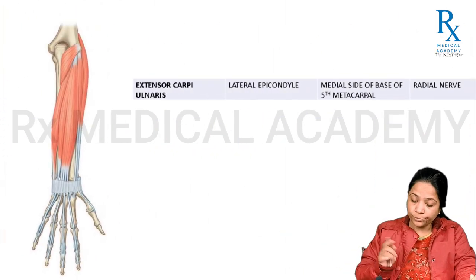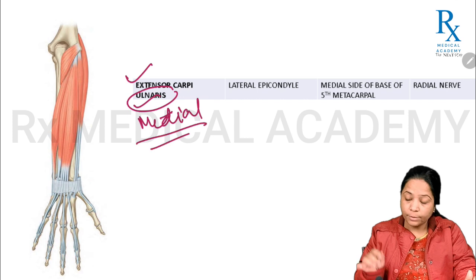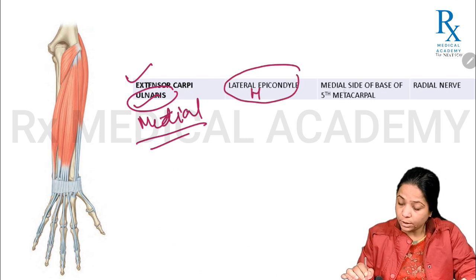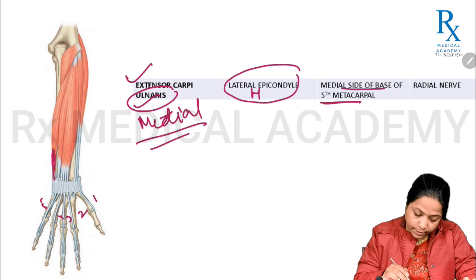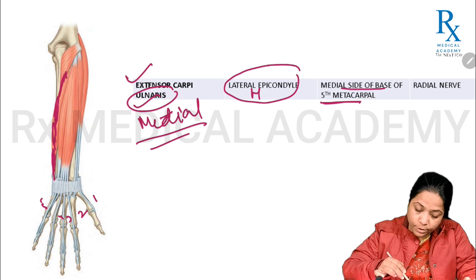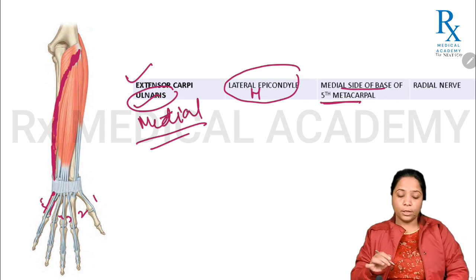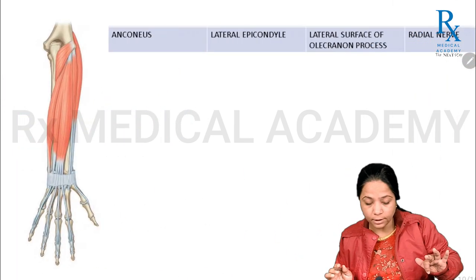Extensor carpi ulnaris is situated mostly on the medial aspect of the posterior compartment of the forearm. It arises from the lateral epicondyle of the humerus and inserts onto the medial side of the base of the fifth metacarpal. In the diagram, you can see it arising from the common extensor origin and inserting onto the base of the fifth metacarpal bone. It is supplied by the radial nerve.